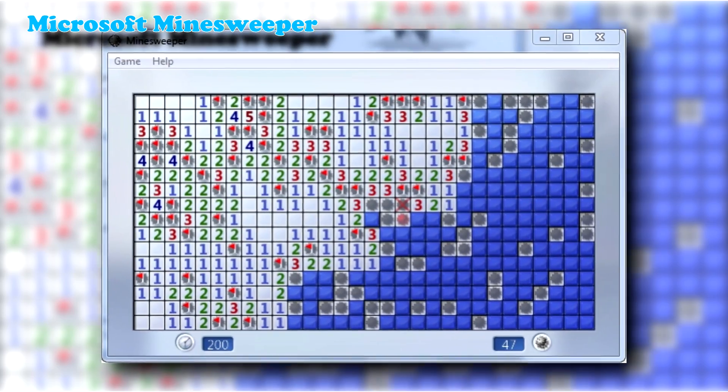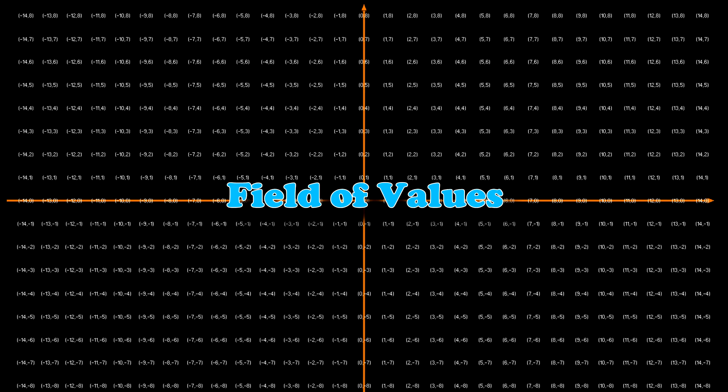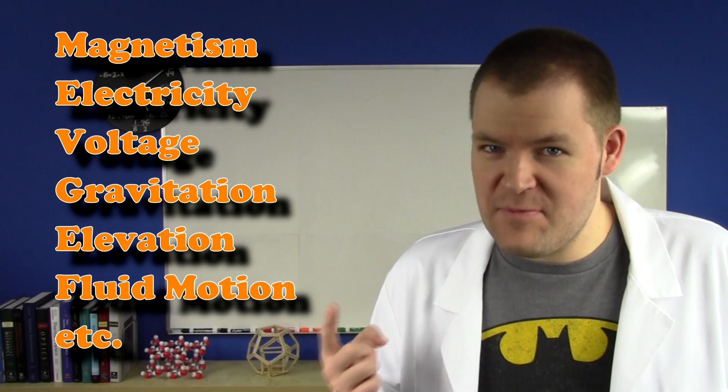Say, a football field. Or a mine field. This is a field of values. Position is not the only number we can assign to these places.